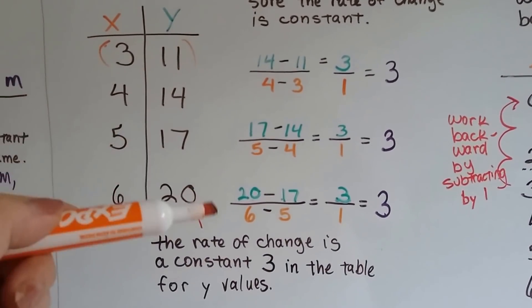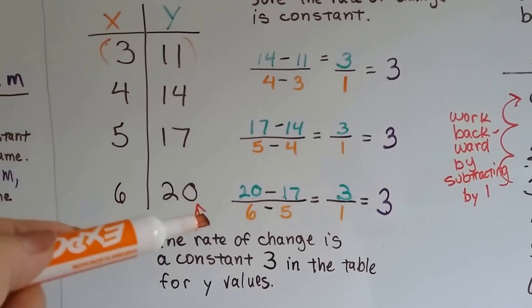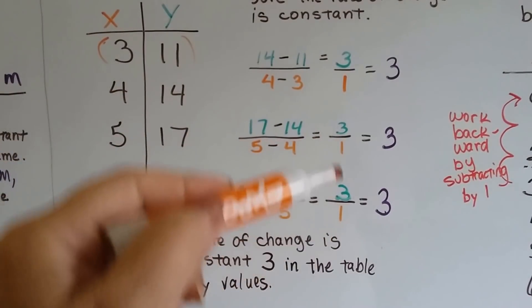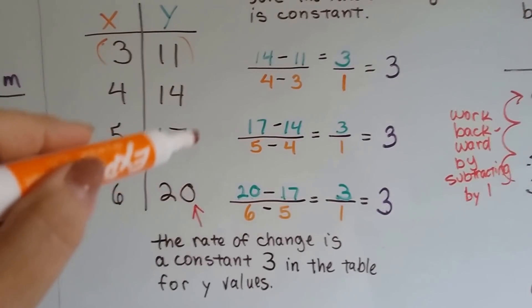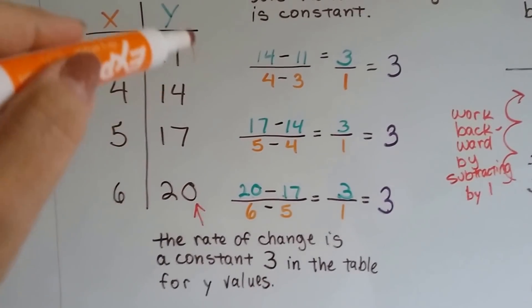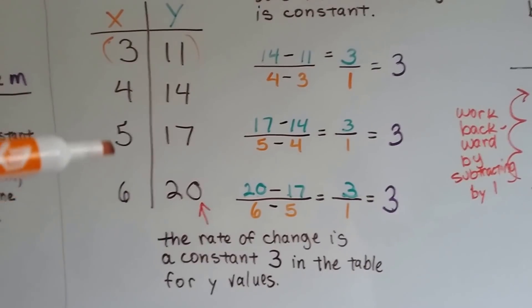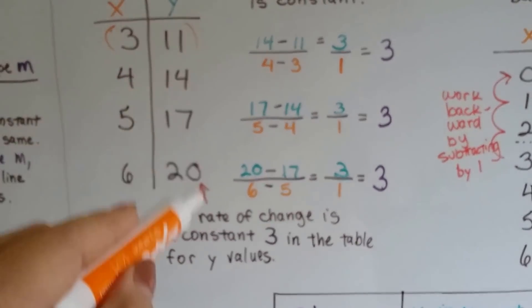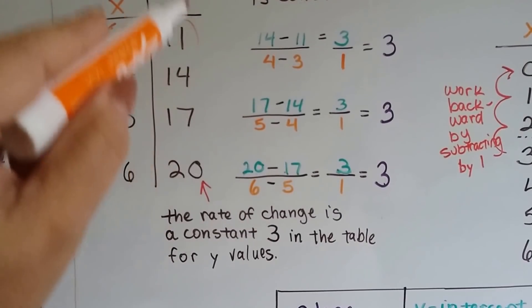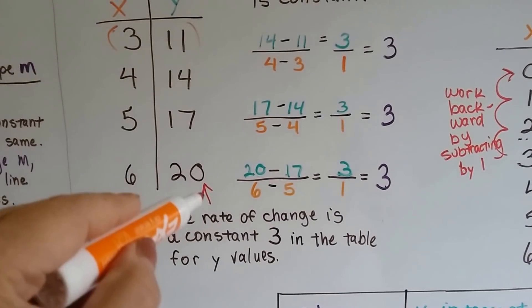And we do that for each one of these to compare them to each other. The 17 to the 14 and the 20 to the 17. And each time I got a 3. We can also see 20, 17, 14, 11, that they're jumping down by 3's, and these are jumping down by 1's. So we know the rate of change right here is constant. It's 3 every single time for the y values.